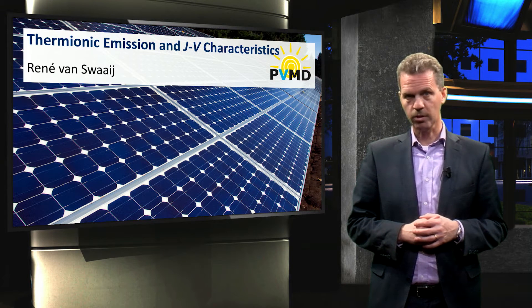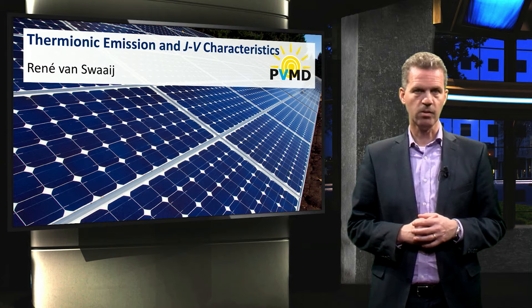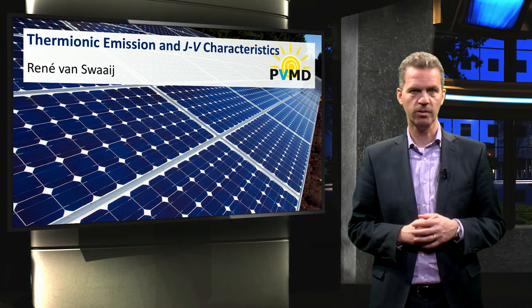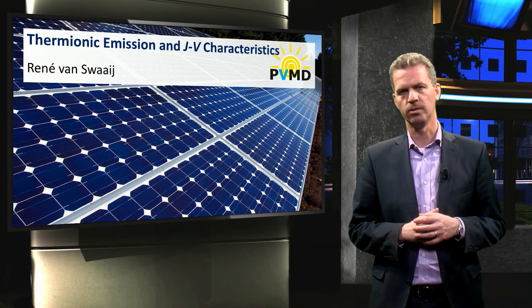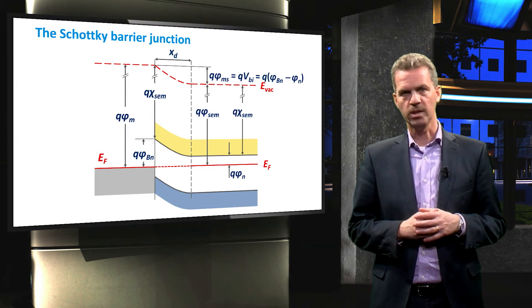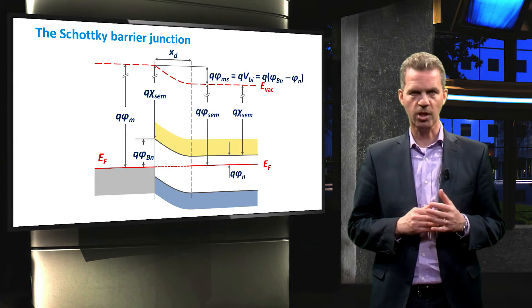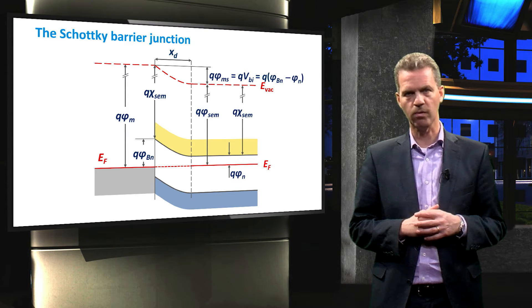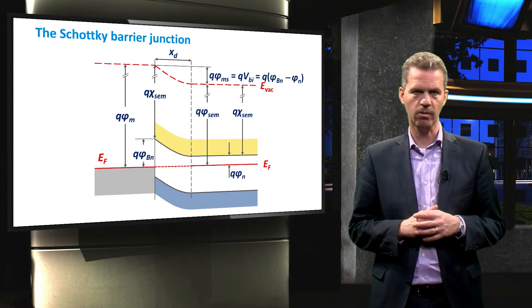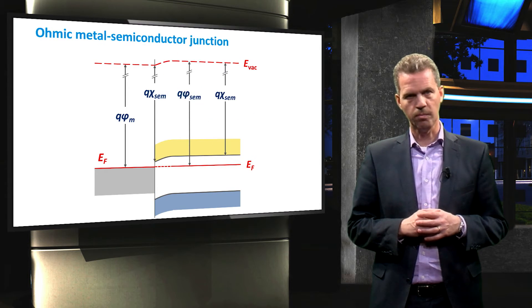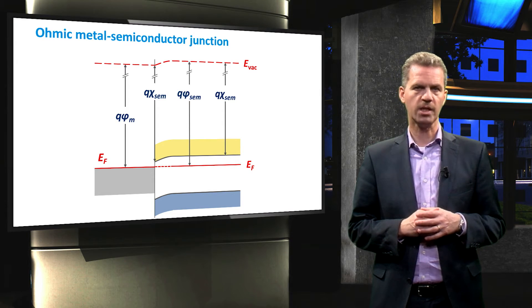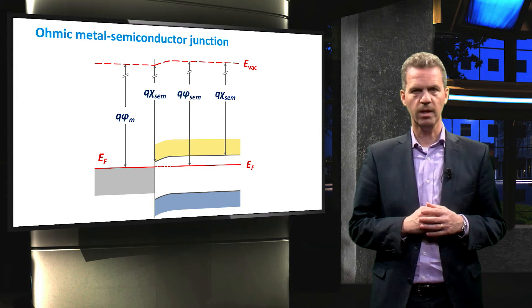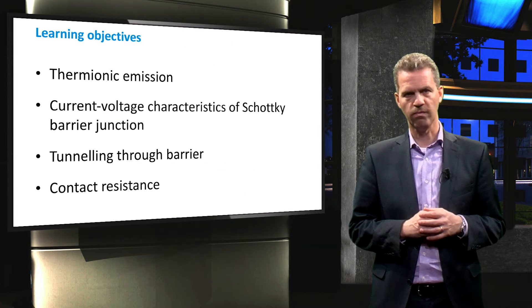Now that we know what a metal-semiconductor junction is, let's derive the current-voltage characteristic of these junctions and examine some specific examples. In the previous video I showed two different metal-semiconductor junctions: the Schottky barrier junction, in which the difference in work functions is such that a barrier is formed for electrons to travel from the n-type semiconductor into the metal, and the ohmic junction in which such a barrier is absent. So far we did not consider the flow of charge carriers across the junction.